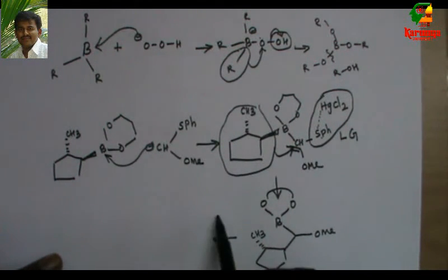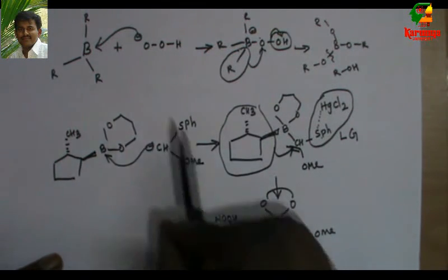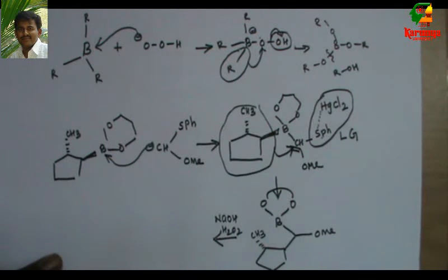Now when this is treated with NaOH and H2O2, the reaction whatever I have described here will take place. So O minus OH will attack here. Then this group will migrate. Again, since this is organoborane, this alkyl group will migrate.